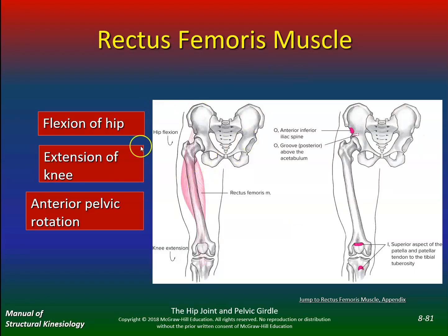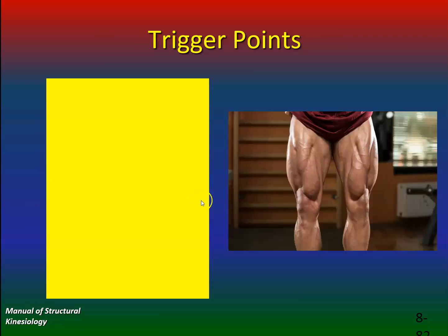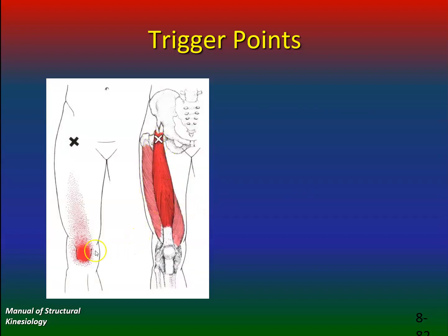The rectus femoris does flexion of the hip, extension of the knee, and anterior pelvic rotation — that's your quads. People with trigger points of the rectus femoris might have pain up where the X is on the diagram, but they might refer pain to the kneecap. That would be muscle referral patterns or trigger points.